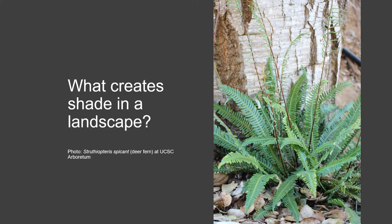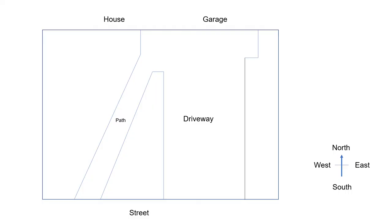So what creates shade in a landscape? Think of a landscape you're familiar with, maybe the landscape you've chosen for your planting scheme project, and think about how the sun falls on this site. Are there any shaded areas and where are those shaded areas in the landscape? Think about where east is — where the sun rises — and where west is — where the sun sets. How does the sunlight falling on your landscape change throughout the day?